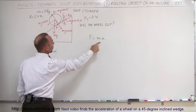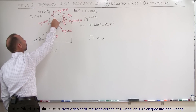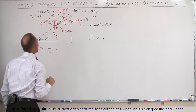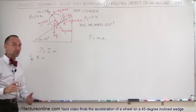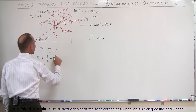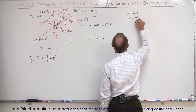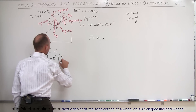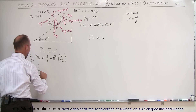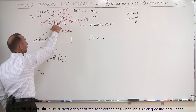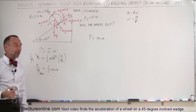Torque = I alpha is the rotational equivalent of Newton's second law. Torque equals the force times the perpendicular distance from the point of rotation to the line of action — here that's the radius. So: friction force times r = (1/2) m r² times alpha. Since linear acceleration a = r times alpha, alpha = a/r. Substituting and canceling r, we get that the maximum friction force the torque can provide equals one-half times mass times acceleration.